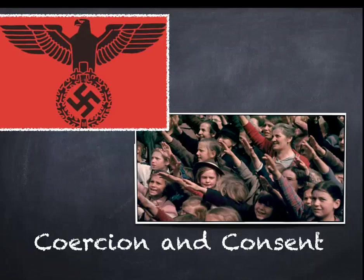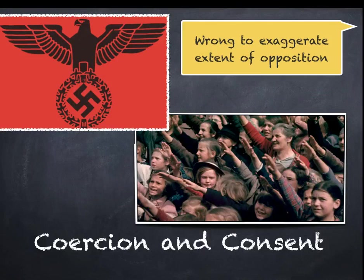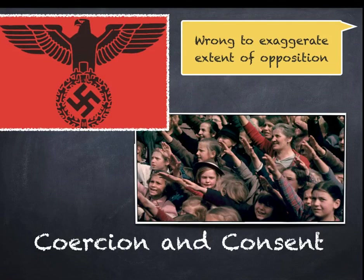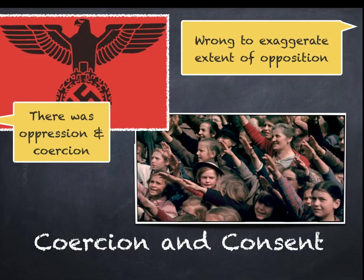Coercion and consent. In this lesson, we're going to look at methods of control that were used by the Nazi Party, things such as the Gestapo, the secret police, and also certain groups that actually supported Hitler and the Nazi Party. Certainly, there was not widespread opposition. It would be wrong to exaggerate and paint a picture that the vast majority of Germans were kept in line by fear. There was also popular support. But it's undeniable there was oppression and coercion.